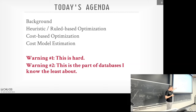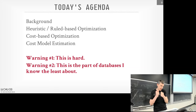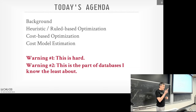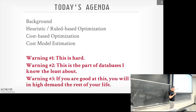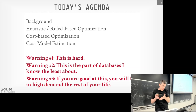Second warning: this is the part of databases I know least about. Today we barely scratch the surface. The expert is the German who wrote the Umbra system — he wrote his own query optimizer from scratch, and has both the best query optimizer and one of the best engines. Third, the good news: if you're really good at this, you can get paid a lot of money. Database companies always ask if I have students working on query optimization — it's always in demand because it's so hard.